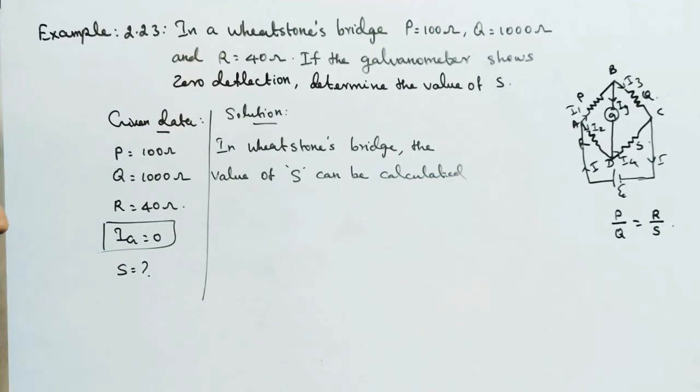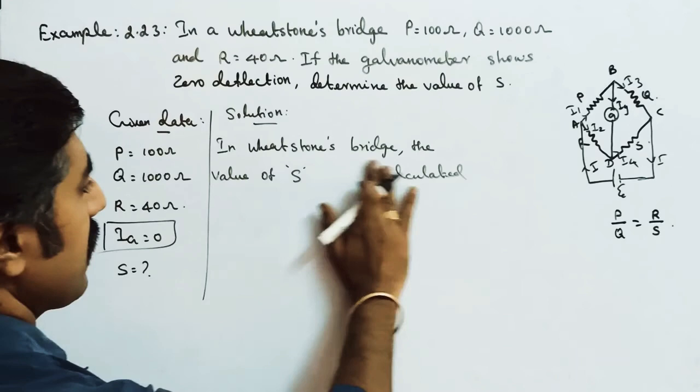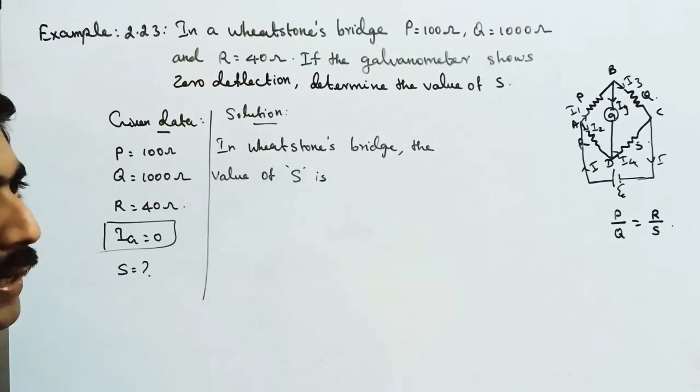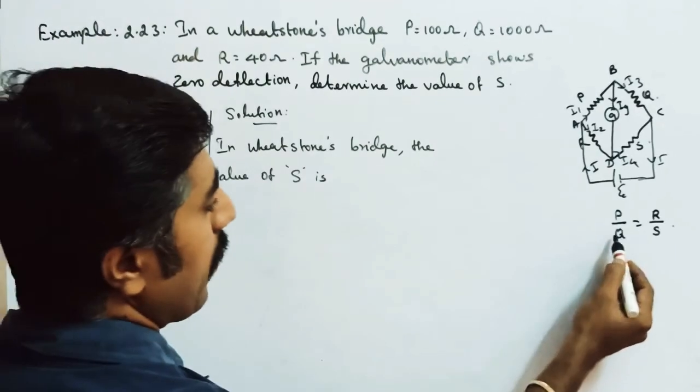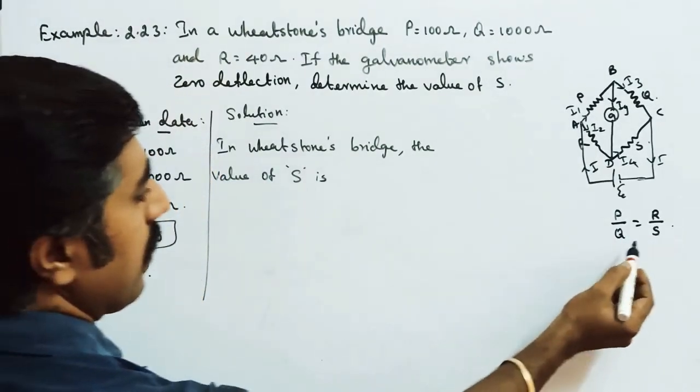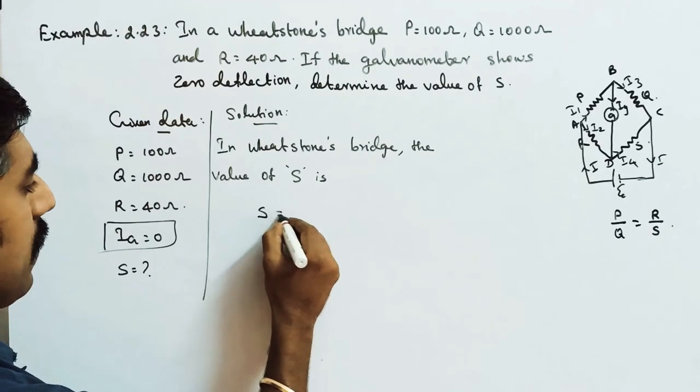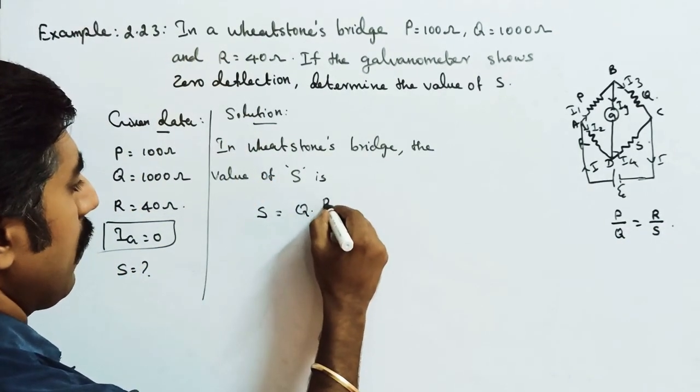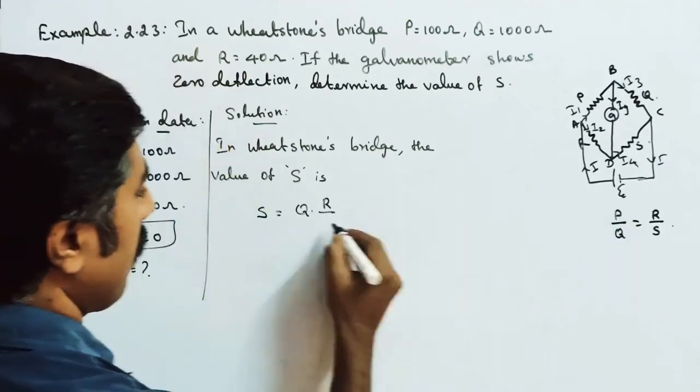In Wheatstone's bridge, the value of S is equal to Q into R by P.